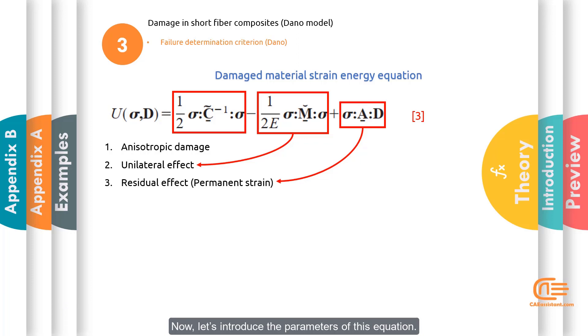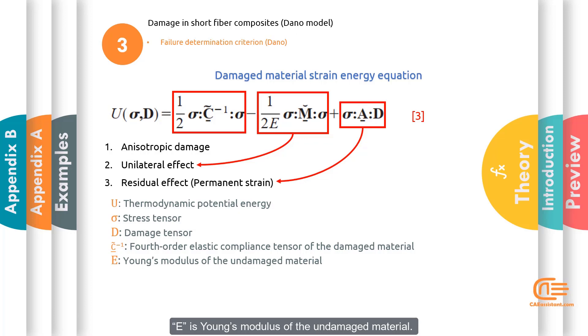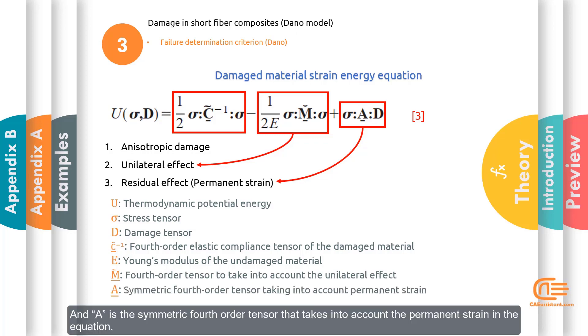Now, let's introduce the parameters of this equation. U is the thermodynamic potential energy. Sigma is the stress tensor and D is the damage tensor. The inverse of C-hat is the fourth order elastic compliance tensor of the damaged material. E is Young's modulus of the undamaged material. M-tilde is the fourth order tensor to take into account the unilateral effect. And A is the symmetric fourth order tensor that takes into account the permanent strain in the equation.